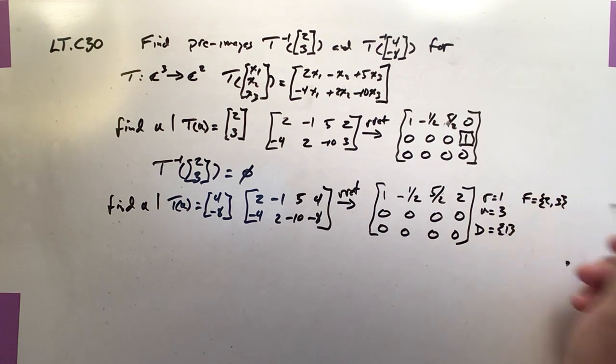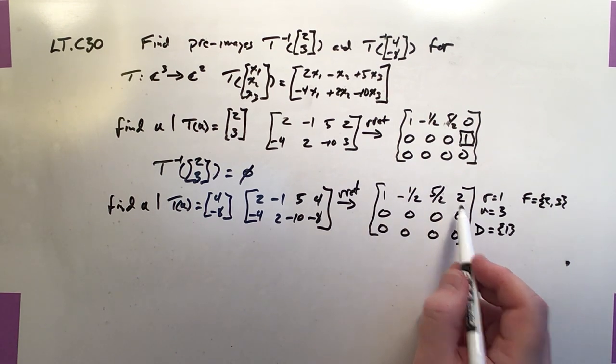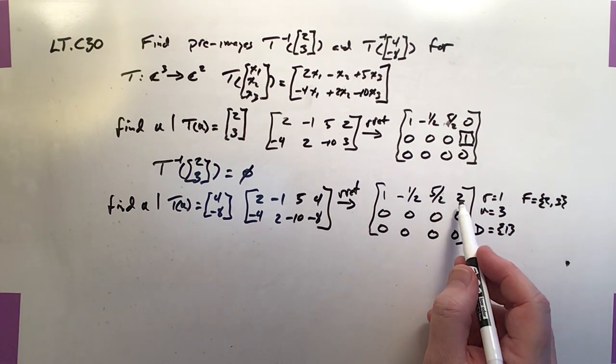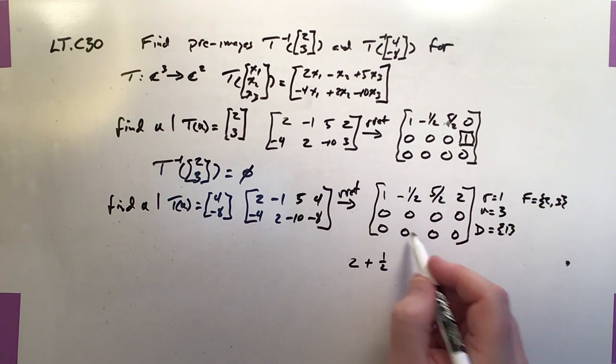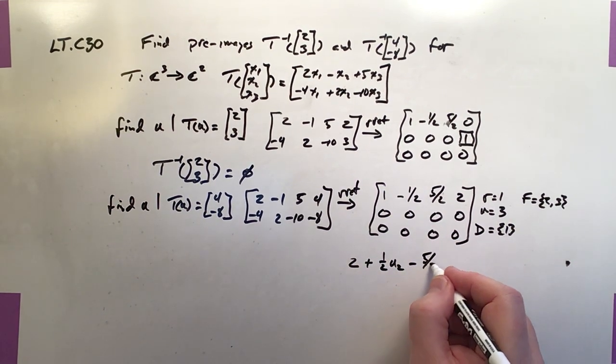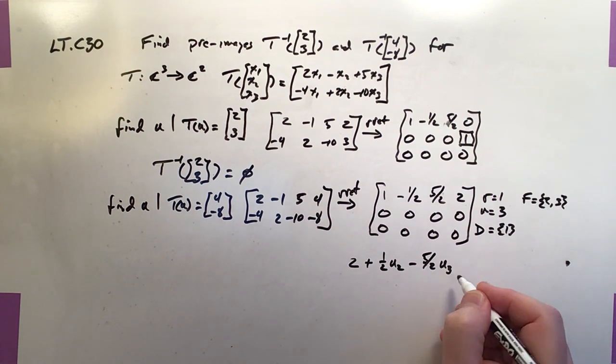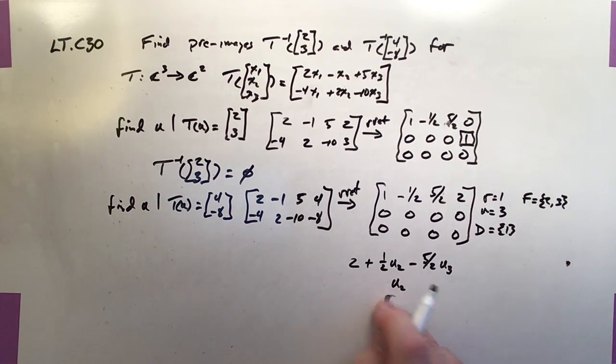So that means x2 and x3 are free variables, and the only one that's determined is x1. So if we wrote a matrix of the solutions, then row 1 would be that it would be 2, because that's the solution, plus 1/2 of u2, minus 5/2 of u3. So that would be the first row, and then, of course, the second row would just be u2, and the third row would be u3.